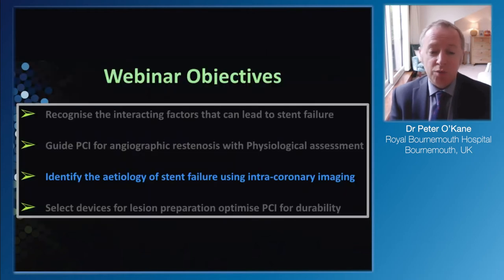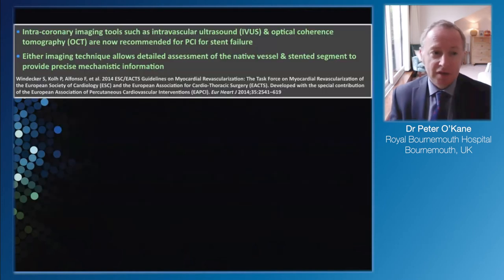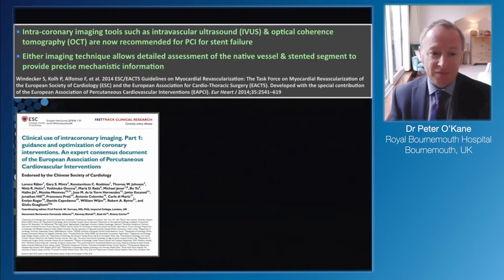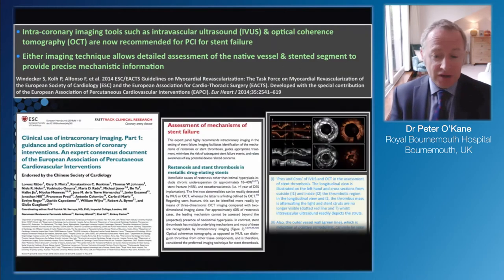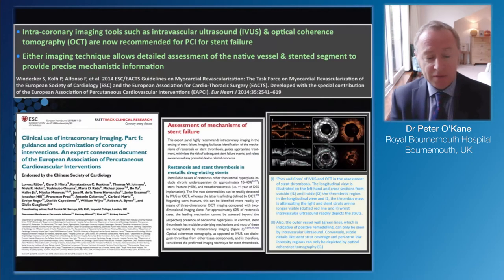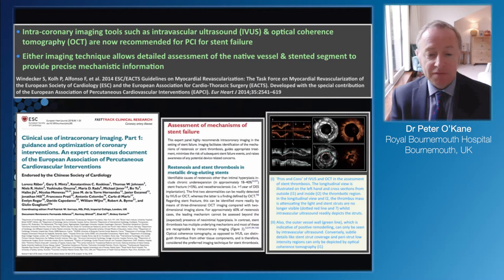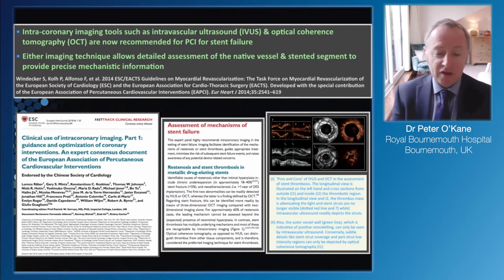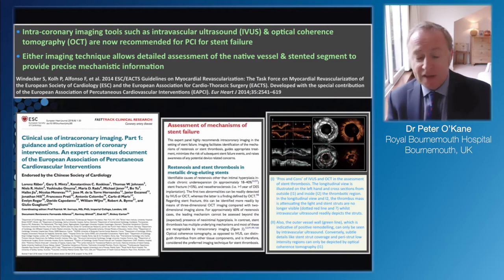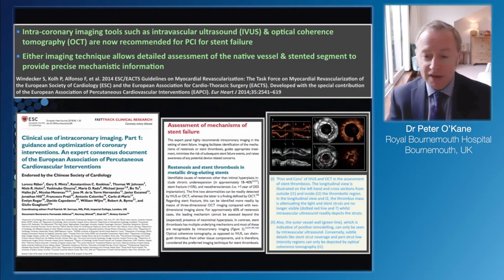You need to understand what's within the stents to really influence how we manage things, and I think intracoronary imaging is now mandated for stent failure. This is reinforced by the consensus paper published last year in the European Heart Journal. Intracoronary imaging is so important because we need to differentiate between simple intimal hyperplasia - relatively straightforward to treat - versus under-expanded stents versus near-atherosclerosis. Both IVUS and OCT are really helpful, so if you only have one, it doesn't really matter.